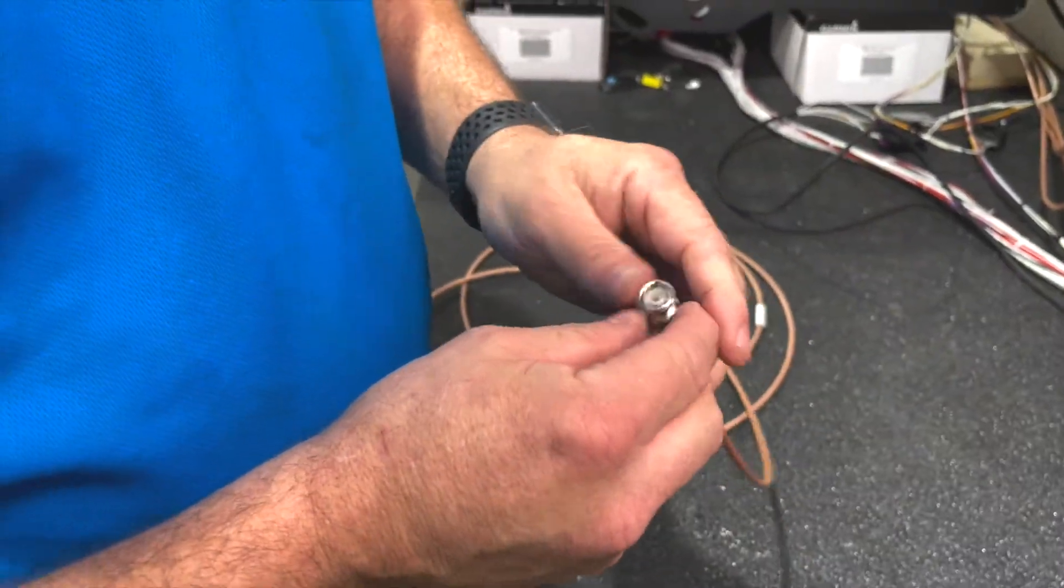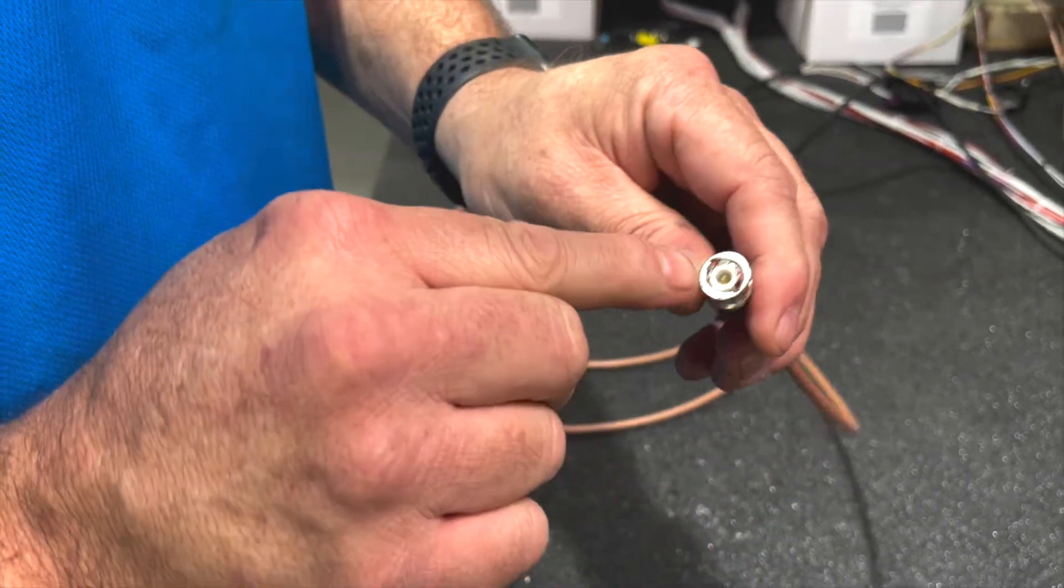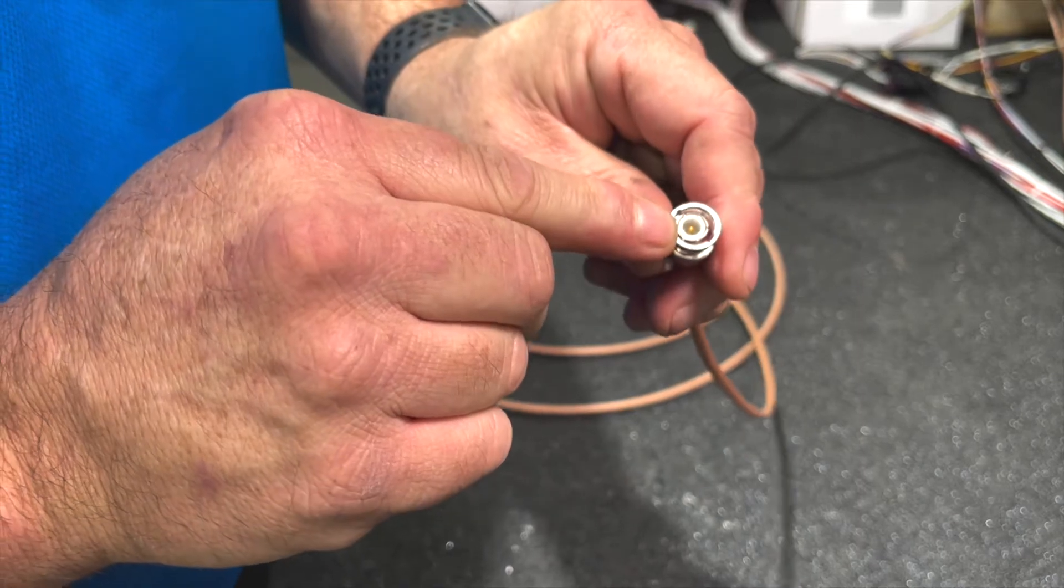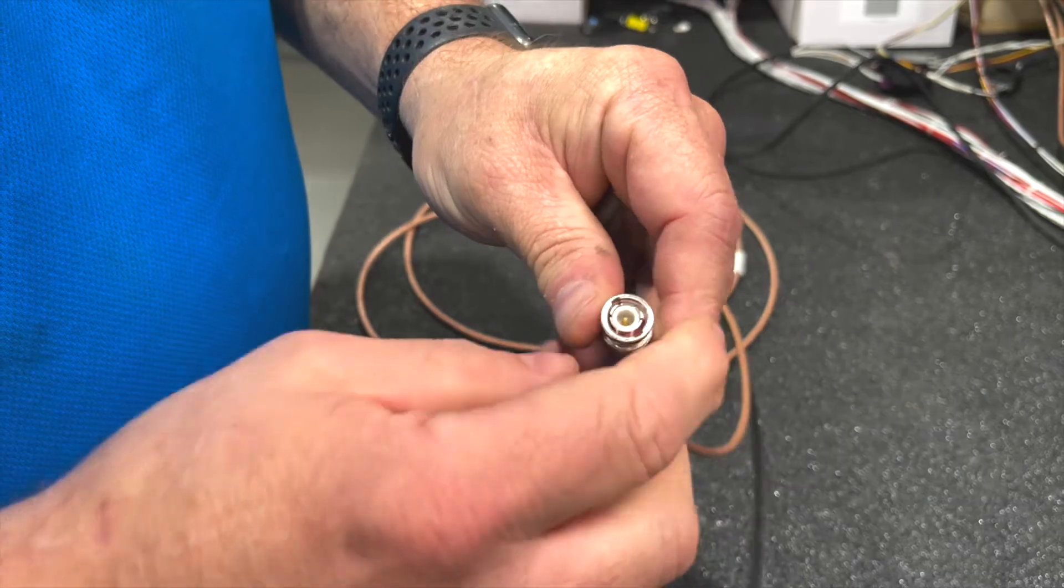The other thing that you're going to want to do is make sure that your center pin is pushed all the way up through so that you can see it. It's pretty much flush with the front of the white part of the connector there, so we know it's going to make good connection.